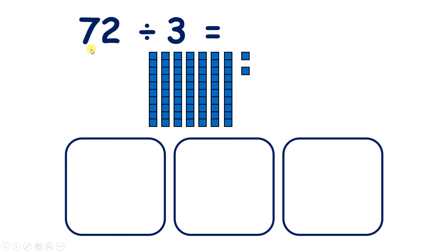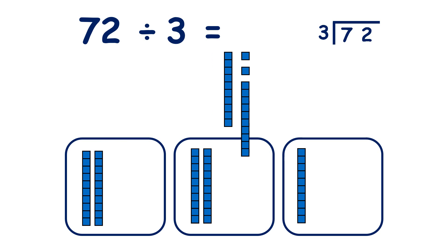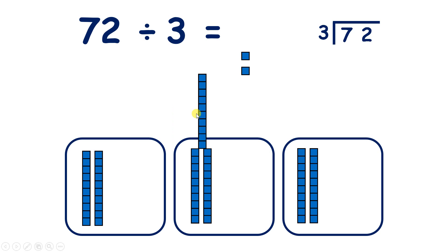Now let's solve 72 divided by 3 using short division. We start by dividing our 7 tens by 3. If we share out our 7 tens, we now have 2 in each group, and we can't share out our 7th 10, because with division we need to share equally. So 7 divided by 3 is 2 remainder 1.